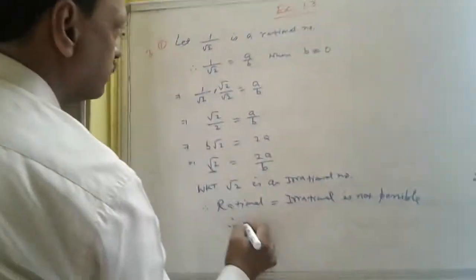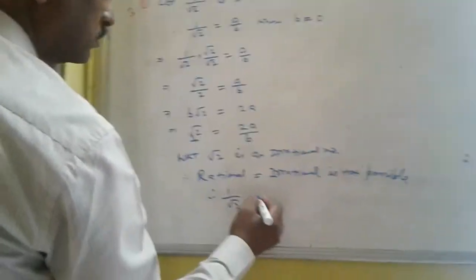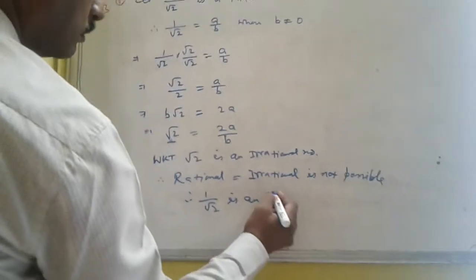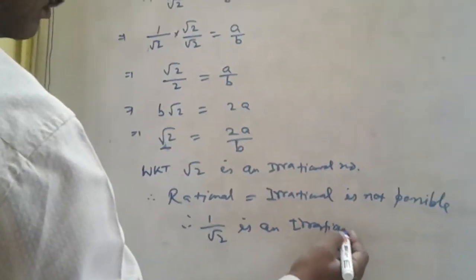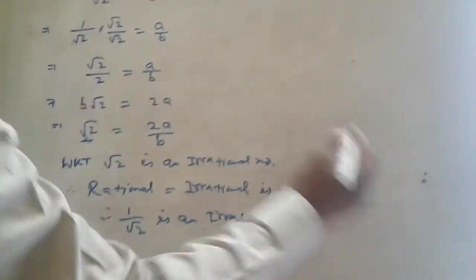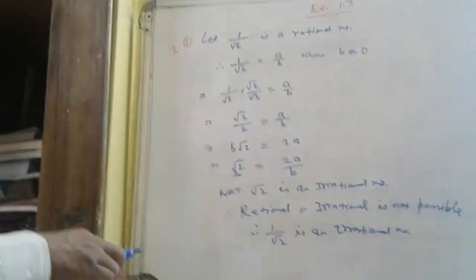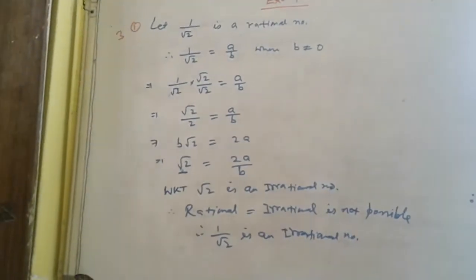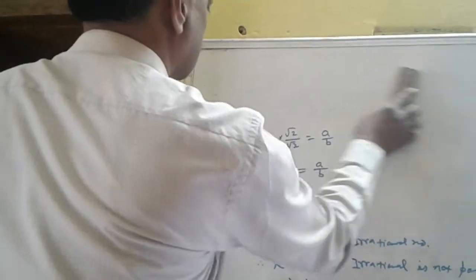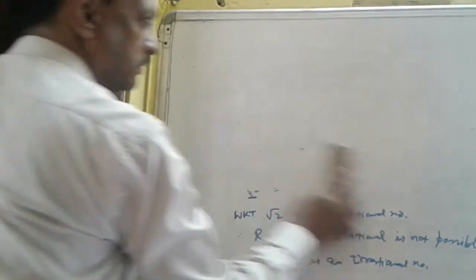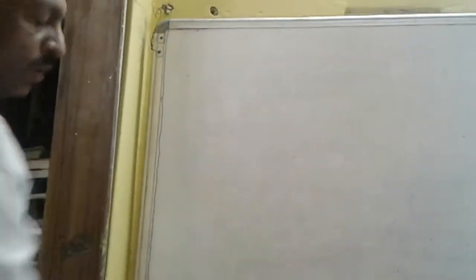Therefore, 1 by root 2 is irrational. Now, we are going into the next exercise, exercise 1.4.